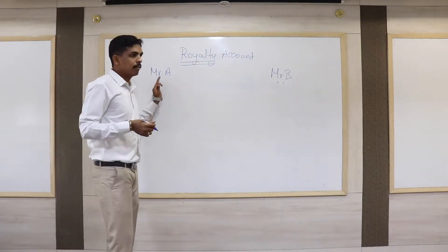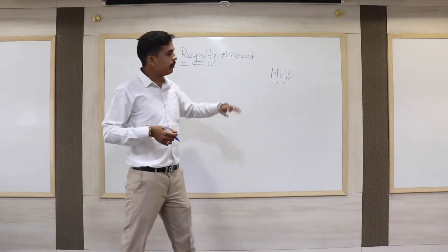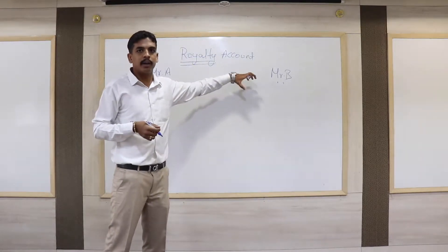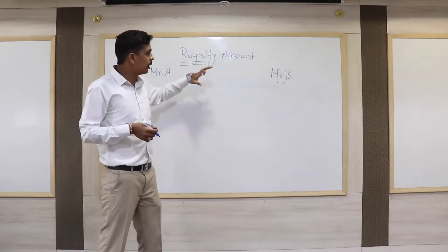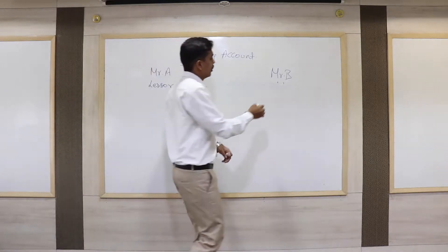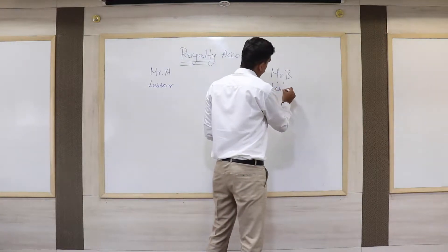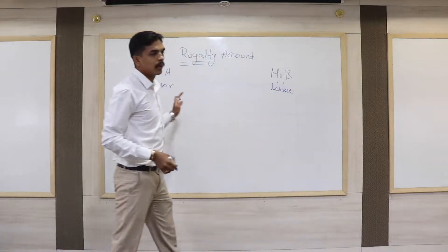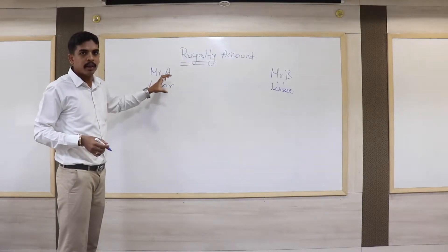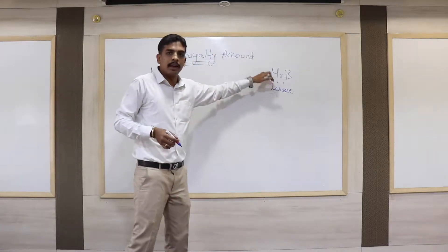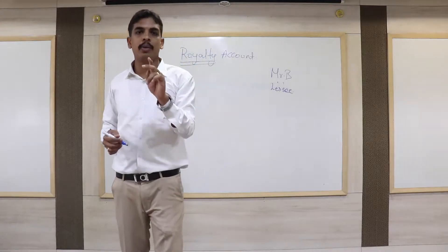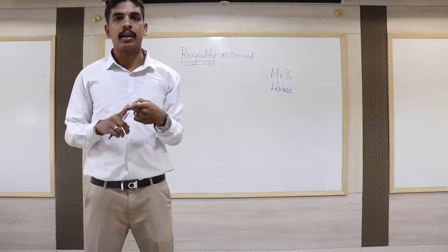Let us take the same example of Mr. A and Mr. B. Mr. B approaches Mr. A for taking the right of the land for mining purposes. Here, Mr. A will be called the Lessor and Mr. B will be called the Lessee. The lessor is the person who gives a right to another person, and the person who takes that right is called the Lessee. These are the two terms we need to understand: Lessor and Lessee.